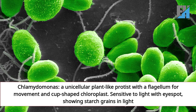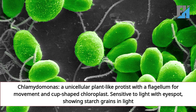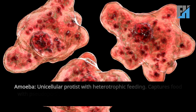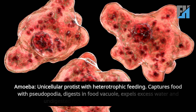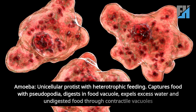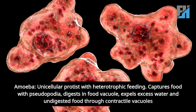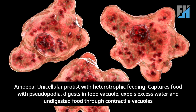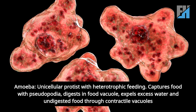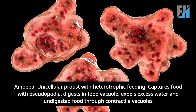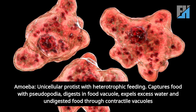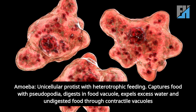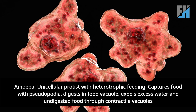Chlamydomonas has an eye spot and stores starch grains in light. Amoeba is a unicellular protist with heterotrophic feeding — it captures food with pseudopodia, digests it in a food vacuole, and expels excess water and undigested food through contractile vacuoles.